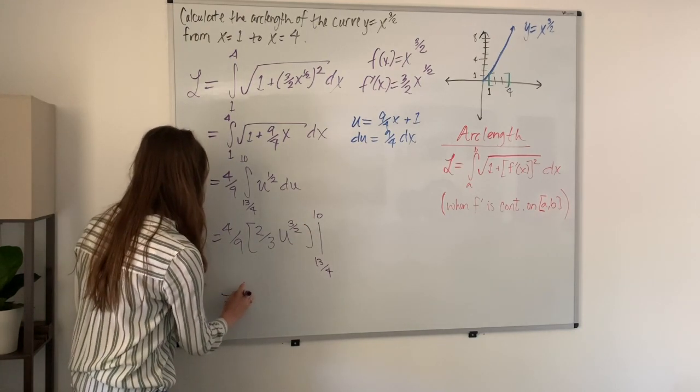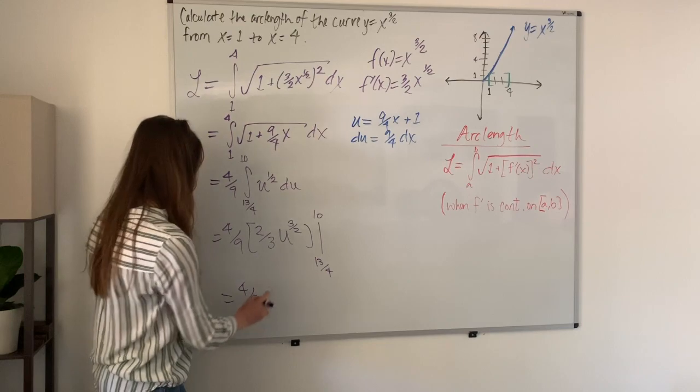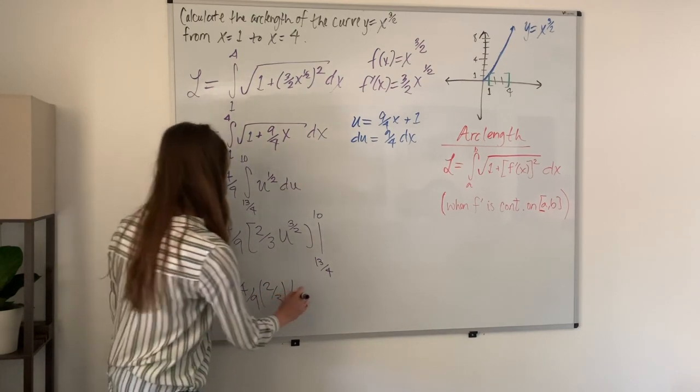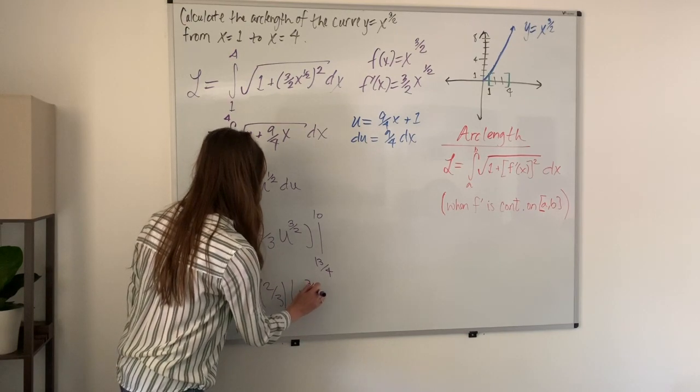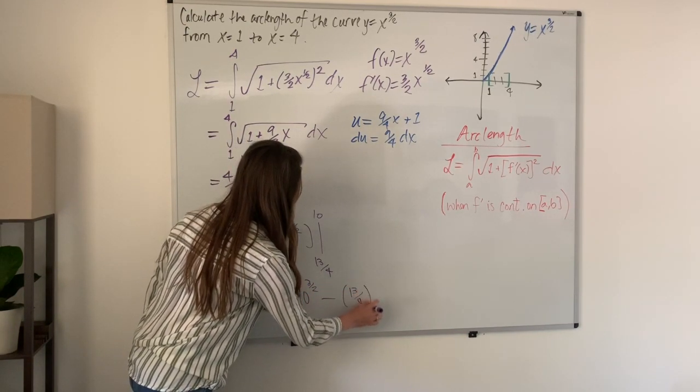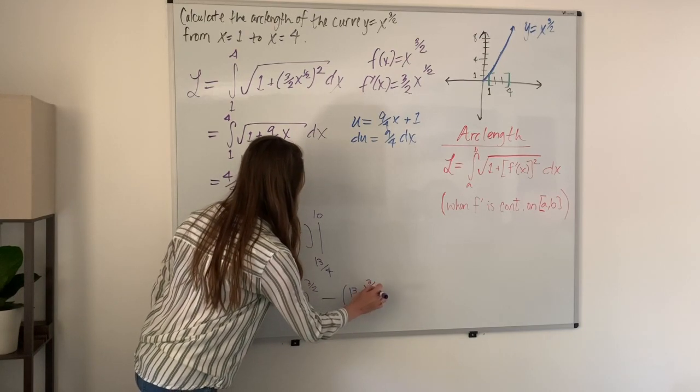If we're going to write that out, we have 4 ninths times 2 thirds times 10 to the 3 halves power minus 13 over 4 to the 3 halves power.